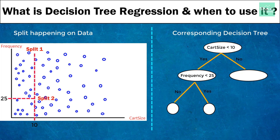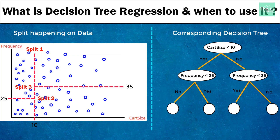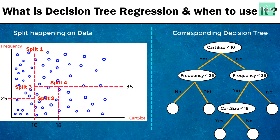Similarly, split 3 happens on the right side of split 1 at the value 35 for the independent variable frequency. Observations below split 3 represent frequency less than 35 and observations above represent frequency greater than 35. From the decision tree perspective, split 3 happened at 35 and only to the right-hand side of split 1. Lastly, split 4 happens for independent variable card size at 18, to the right of split 1 and below split 3.